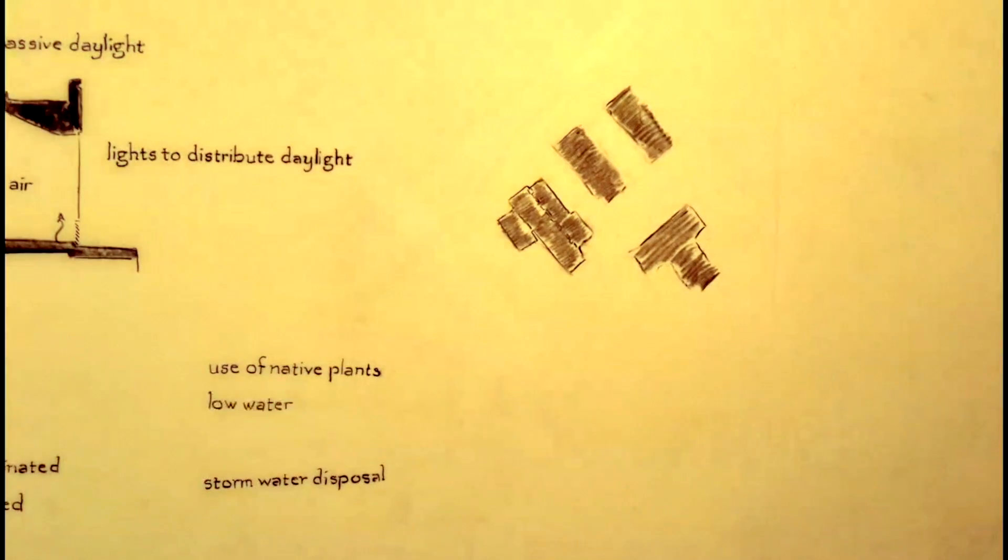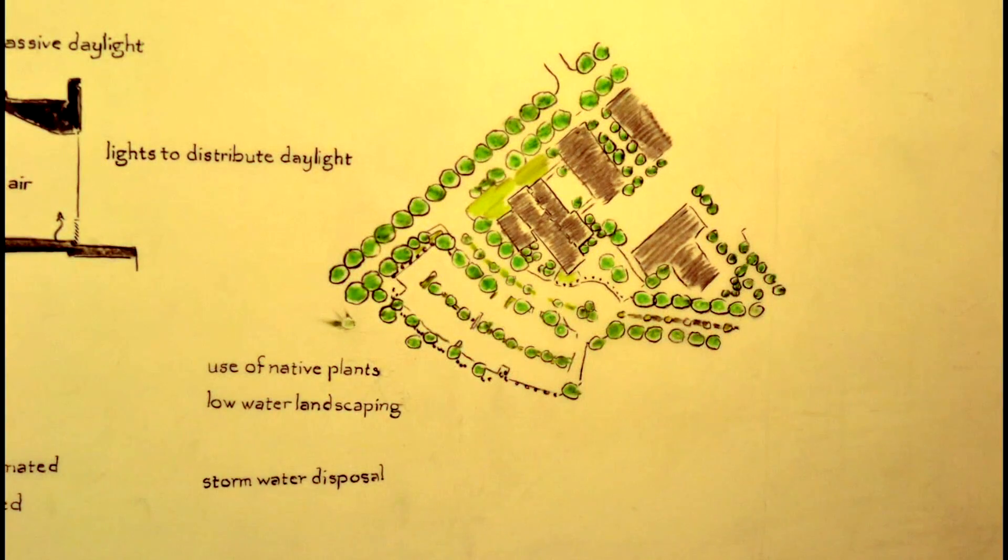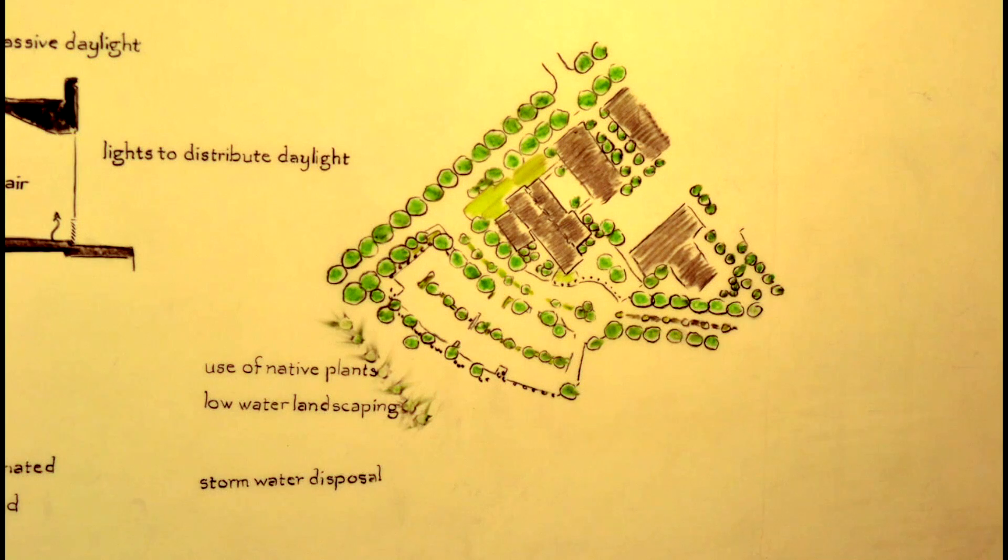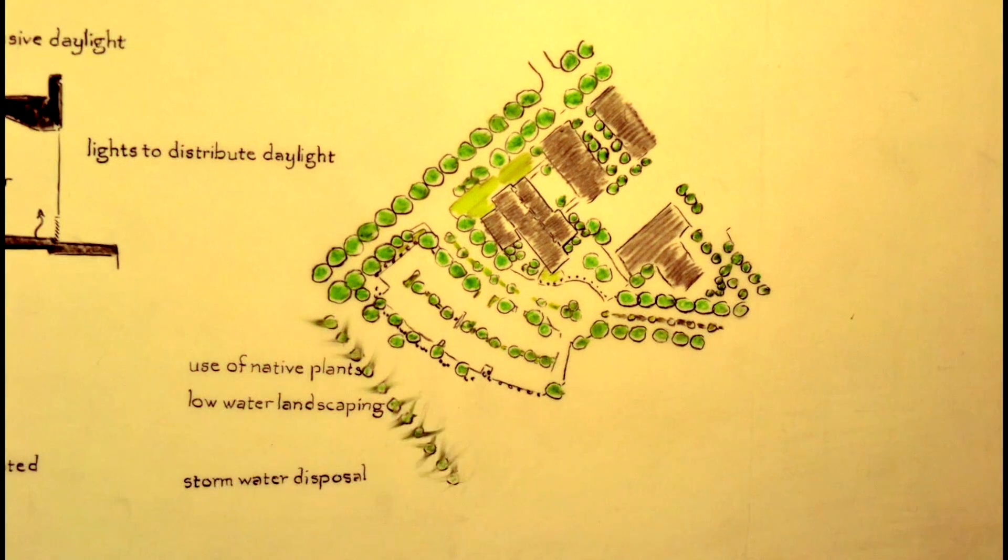Infrastructure for a stormwater disposal system is in place. The landscape design emphasizes the use of native plants and a high-efficiency irrigation system to achieve low-water landscaping.